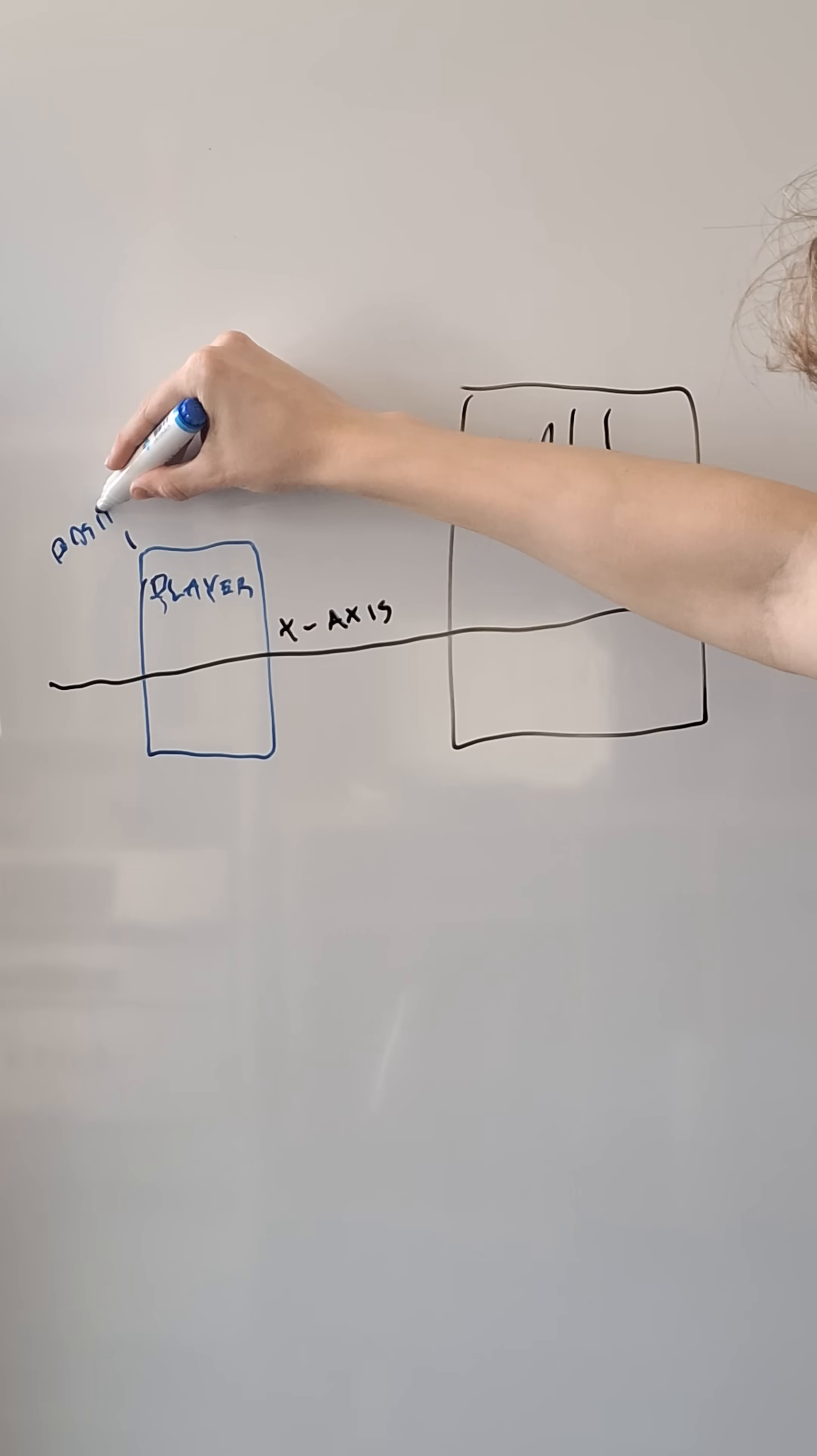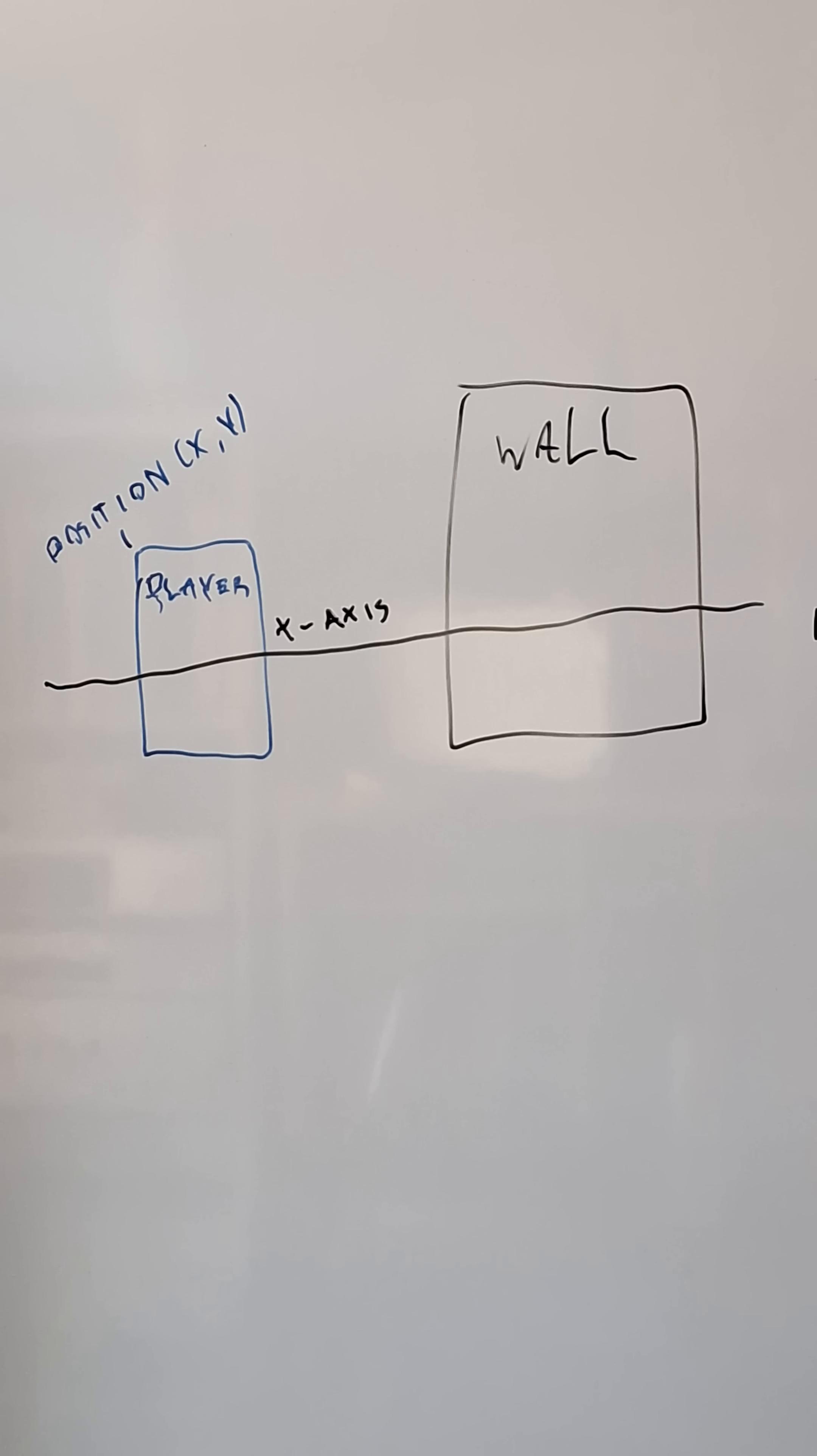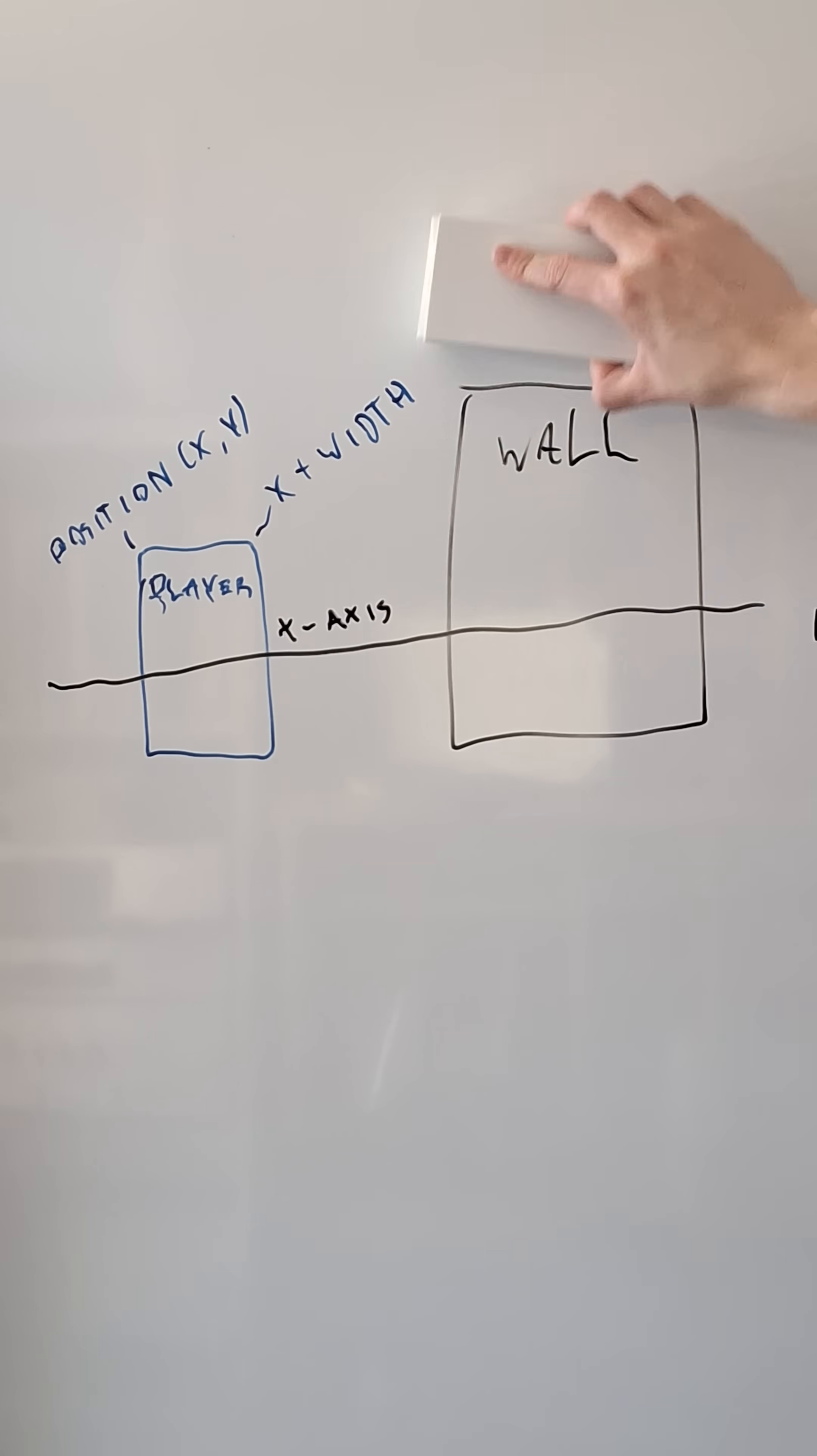The position of a rectangle is always determined by the upper left corner, so the right side of a rectangle is calculated by the rectangle's width added to the rectangle's x-position.